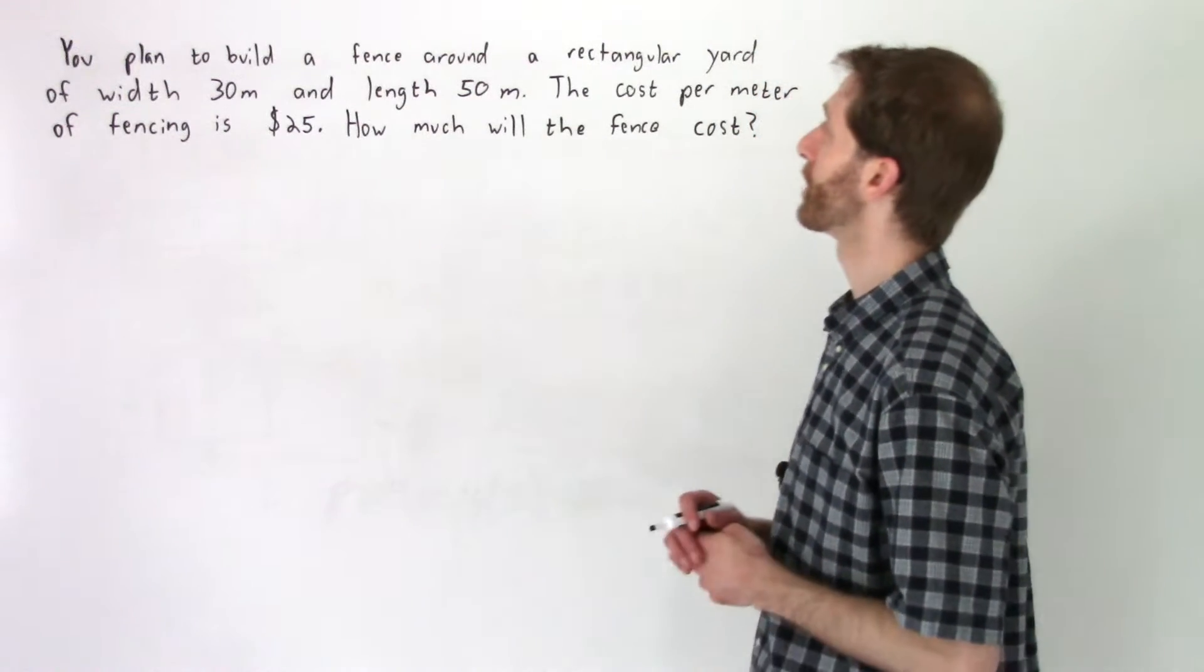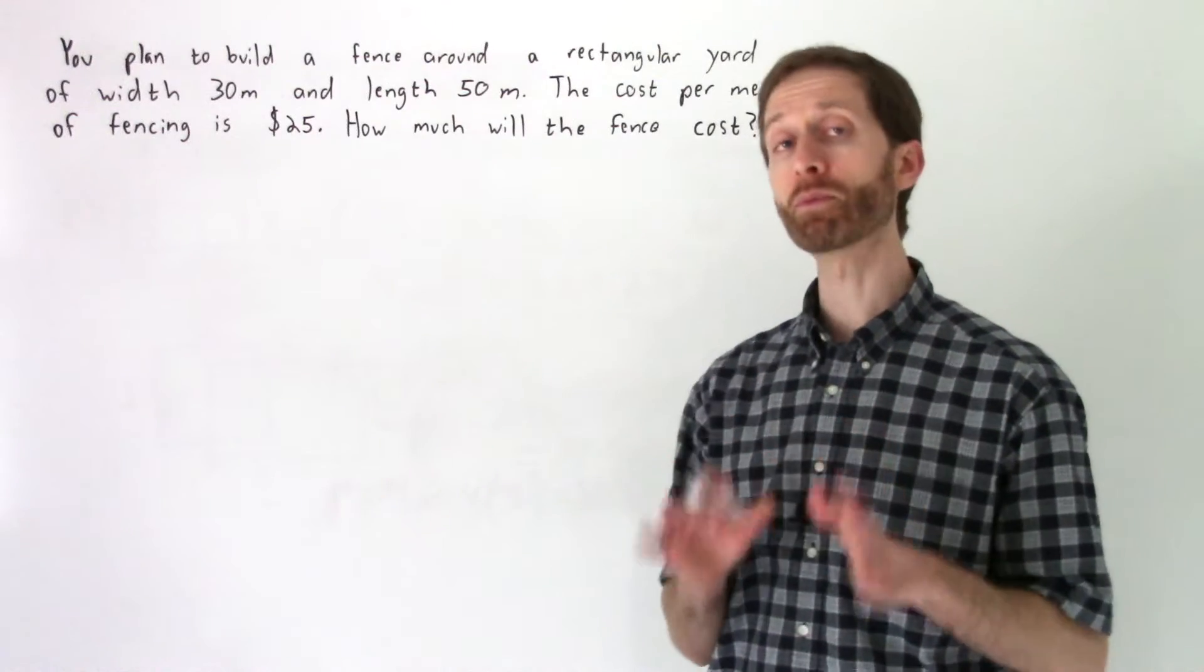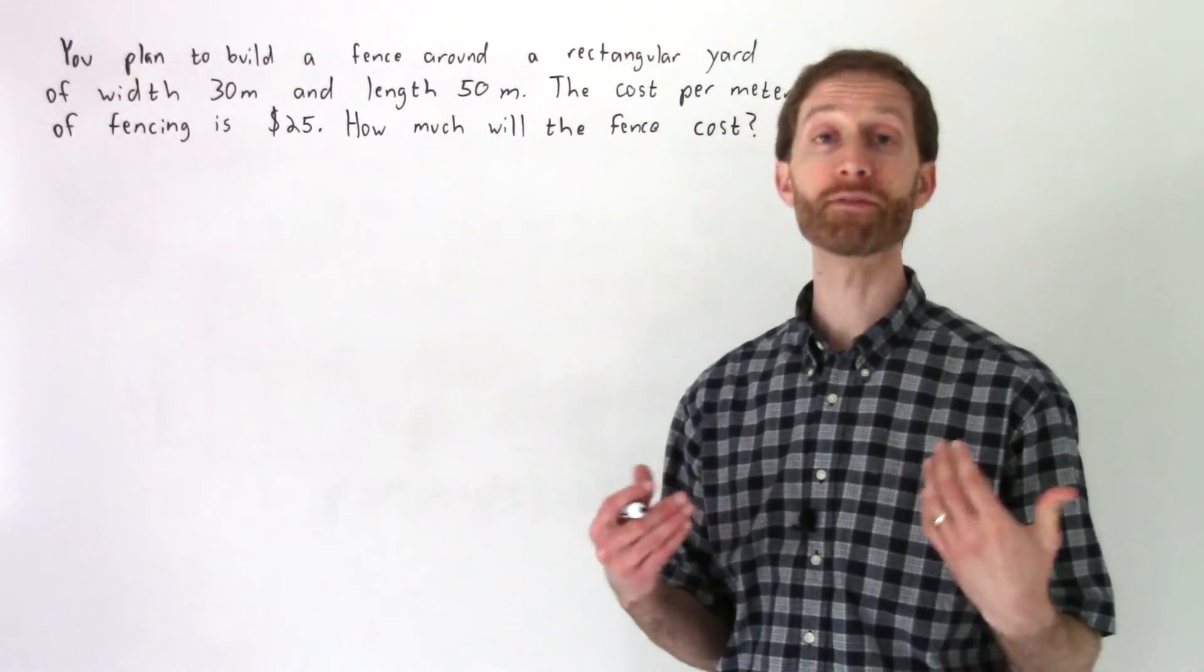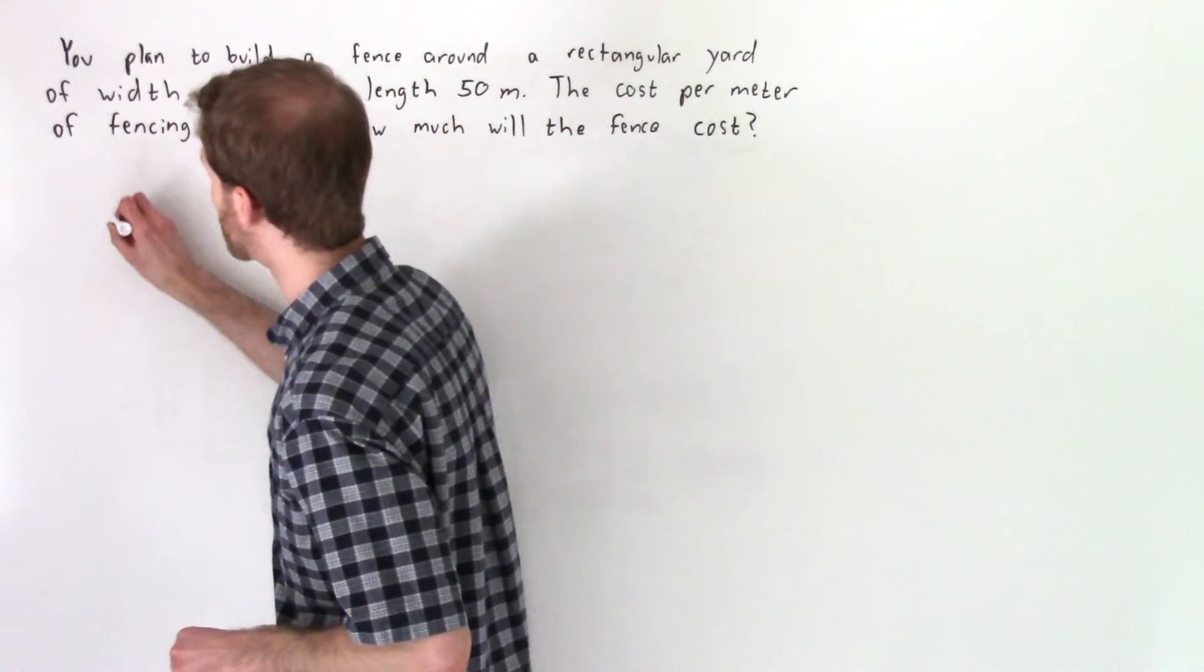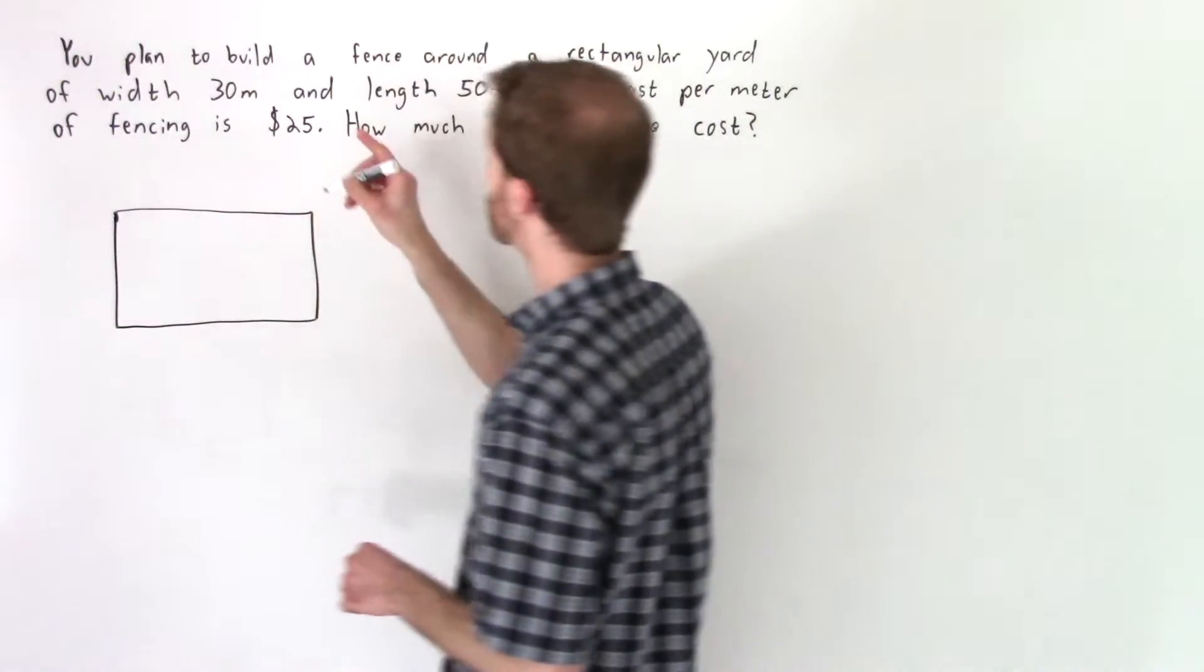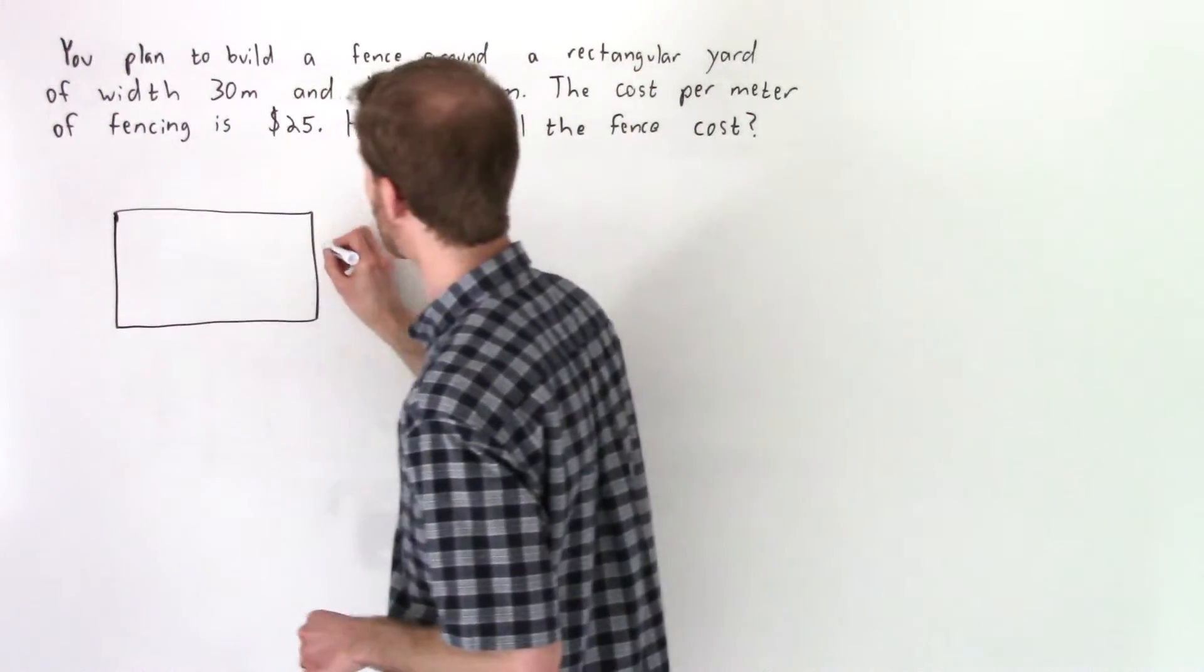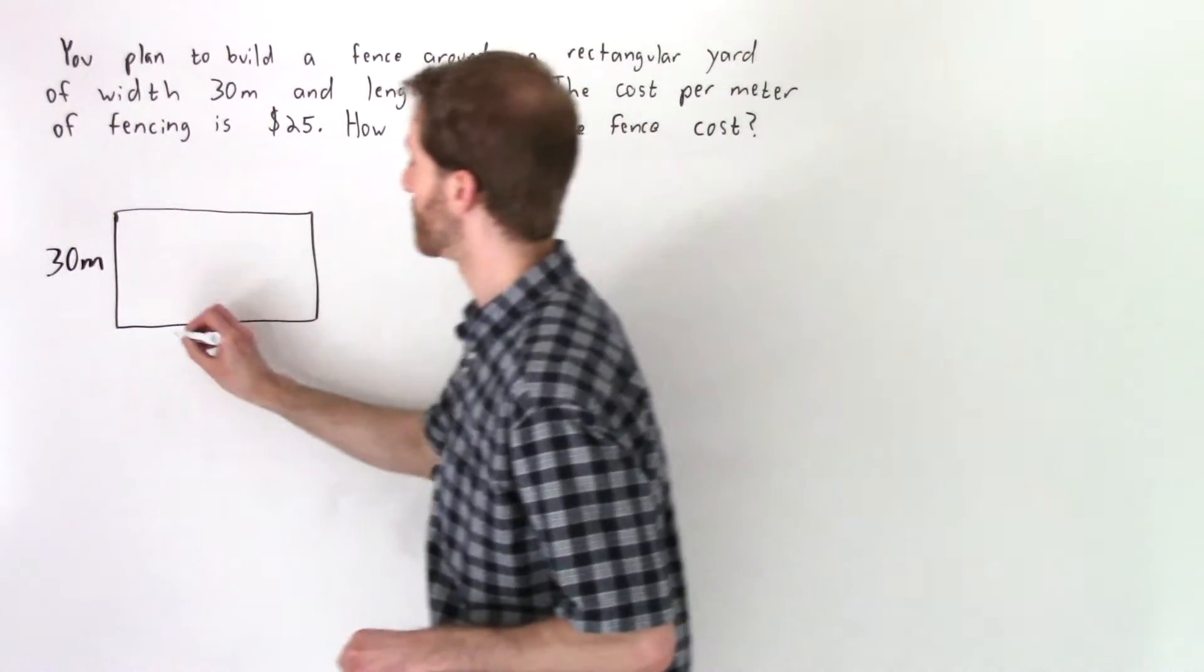You plan to build a fence around a rectangular yard of width 30 meters and length 50 meters. So I stopped reading the word problem at this point because I have the opportunity to draw a picture. Rather than get overwhelmed by all those words I'm going to draw a rectangle. We've got a yard that is 30 meters wide and then 50 meters long.